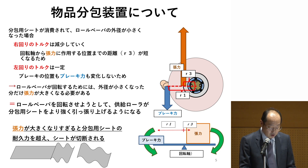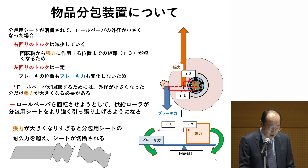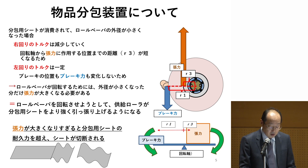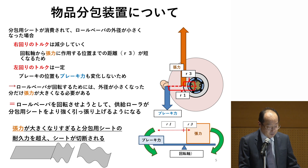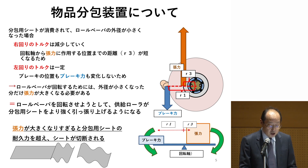It is necessary to gradually increase the tension to maintain the magnitude of the torque caused by tension to rotate the roll paper. However, if the tension becomes too large, it may lead to issues such as cutting of the sheet. Thus, when the braking force is constant as the packaging sheet is drawn out, the braking force becomes relatively excessive. Therefore, it is essential to adjust the braking force to keep the tension within an appropriate range.